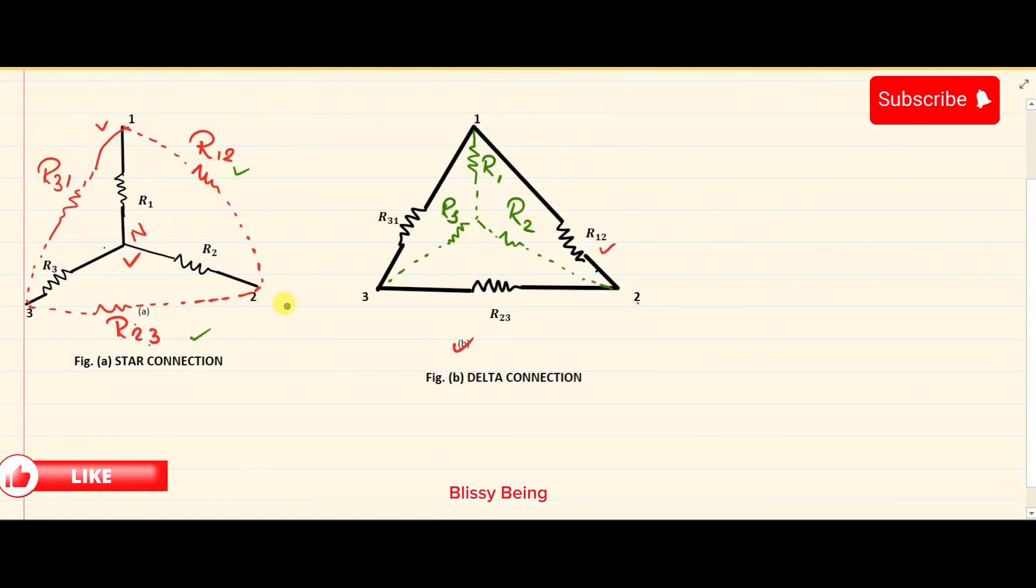Today we are focusing on deriving the formulas. Once you derive the formula, it will be easier for you to transform any star circuit into delta or any delta into a star.